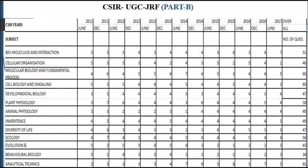There are 13 units in the CSIR syllabus. I listed them here and analyzed the previous year papers from June 2011 to June 2017. You can see the number of questions asked year by year and the total number of questions asked from every chapter in the CSIR examination. Let's look at the graphical representation of this analysis.